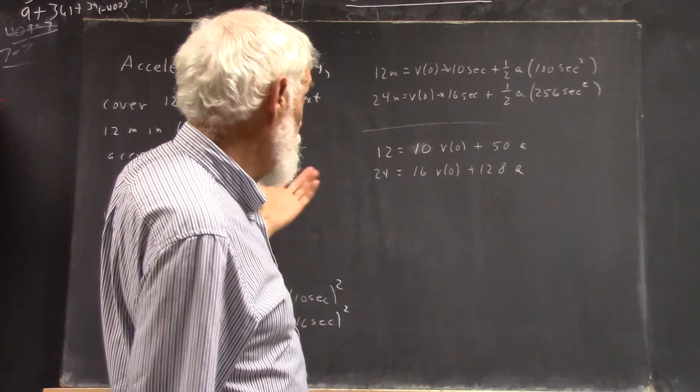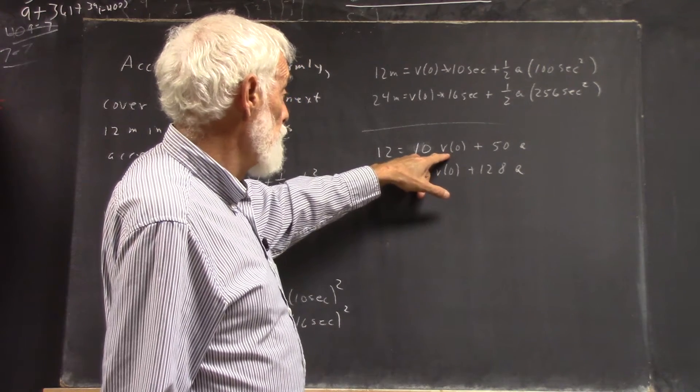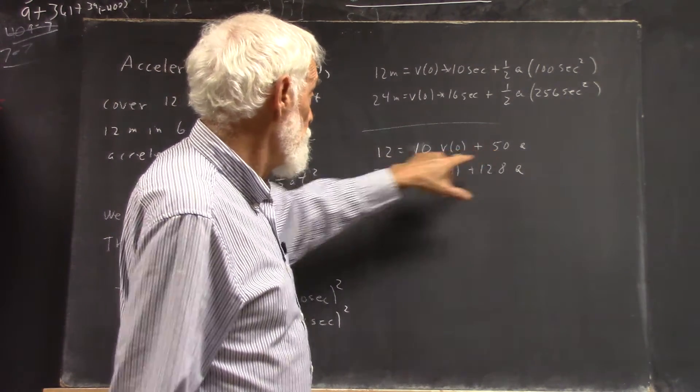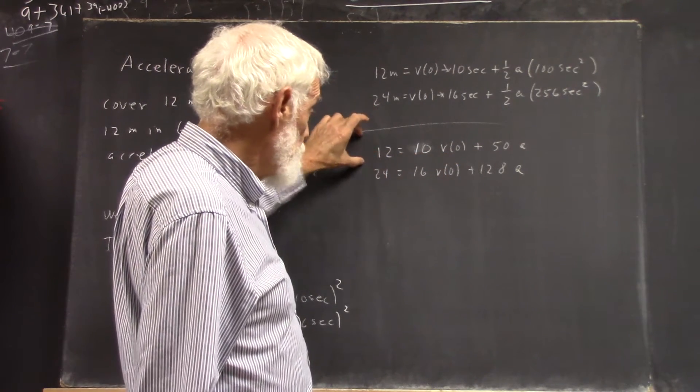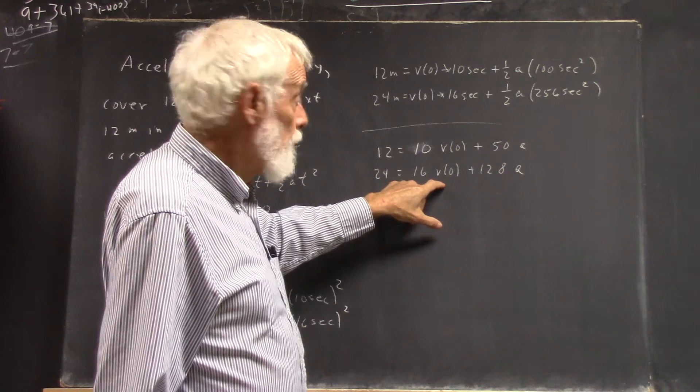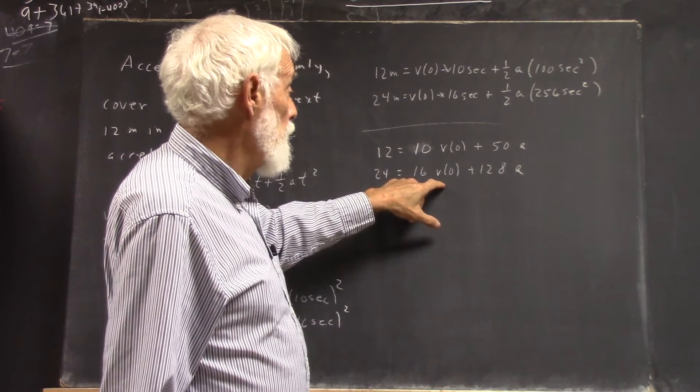Alternatively, you could say, solve this for v(0). You'd subtract the 50A from both sides and divide by 10. And whatever expression you get, plug it in here. There won't be any A left.